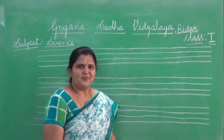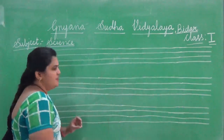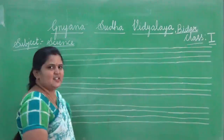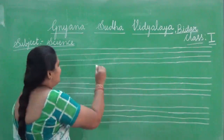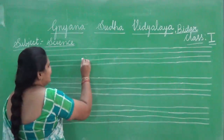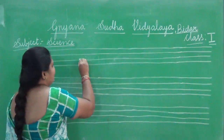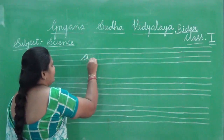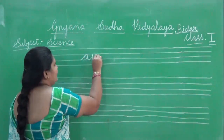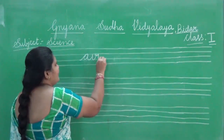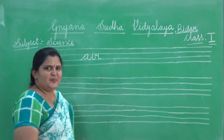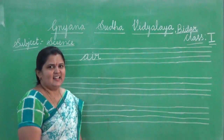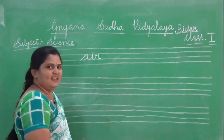Look at the board. So first word is three letter word. First letter is A, I, R. You are going to repeat it. A, I, and R.